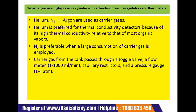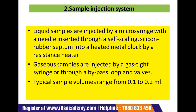The carrier gas used in this method includes helium, hydrogen, carbon dioxide, and argon. Helium is preferred for thermal conductivity detectors because of its high thermal conductivity relative to that of most organic vapors. Hydrogen is preferable when a large consumption of carrier gas is employed. The carrier gas from the tank passes through a flow meter at 1 to 1000 ml per minute for capillary systems, with restrictors and a pressure gauge at 1 to 4 atmospheres.